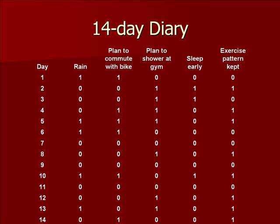This data shows the resulting data from the client's diary. It shows data for 14 days and whether any one of the causes or constraints were present. For example, on day one, it rained and the client was planning to commute with a bike and did not exercise. The last column shows whether the client exercised or not. This data needs to be analyzed to see if it supports the client's assertion of what causes exercise.